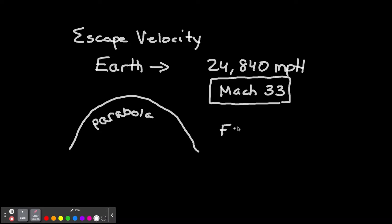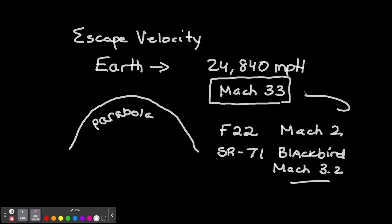And that speed is Mach 33, just to give you an idea. Mach is the speed of sound. So you got to go 33 times the speed of sound to escape Earth's velocity. And to put it in perspective, the F-22 Raptor can go Mach 2. The SR-71 Blackbird went Mach 3.2. Nowhere close to Mach 33 that you need.